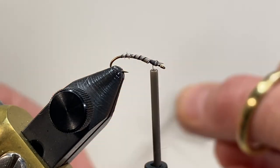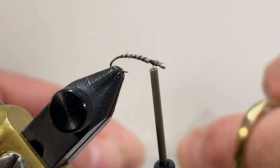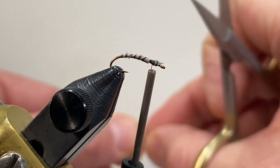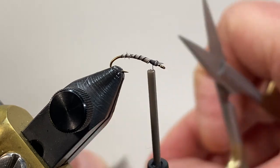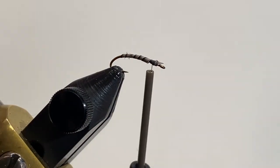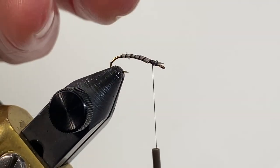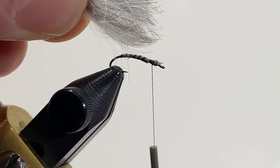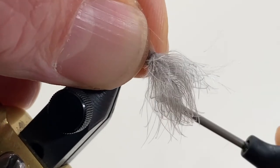We're going to use two CDC feathers off of Goose, line them up. This is going to form our overwing. It really is designed to suspend the fly right into the film. We want it to be at least the length of the shank or the length of the body, curvature facing up perhaps.